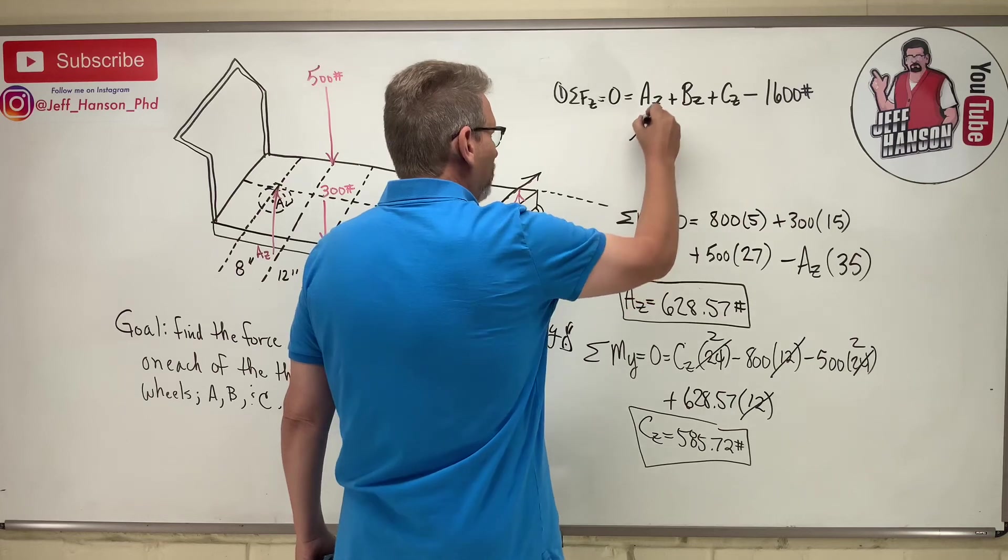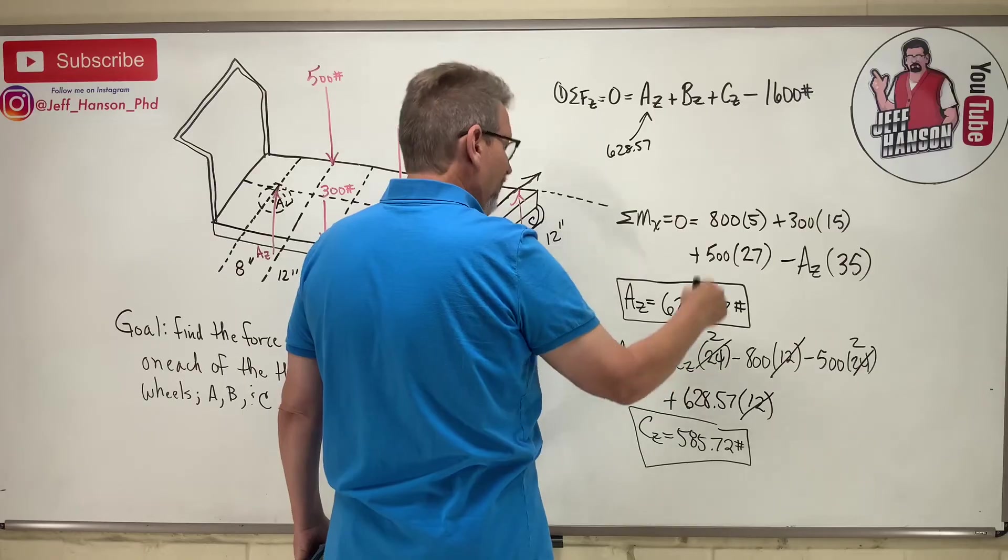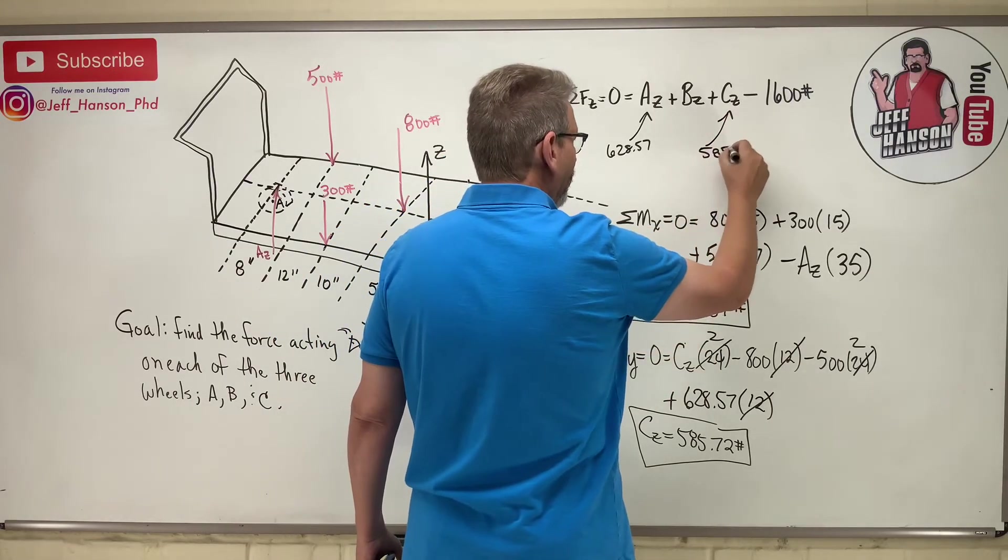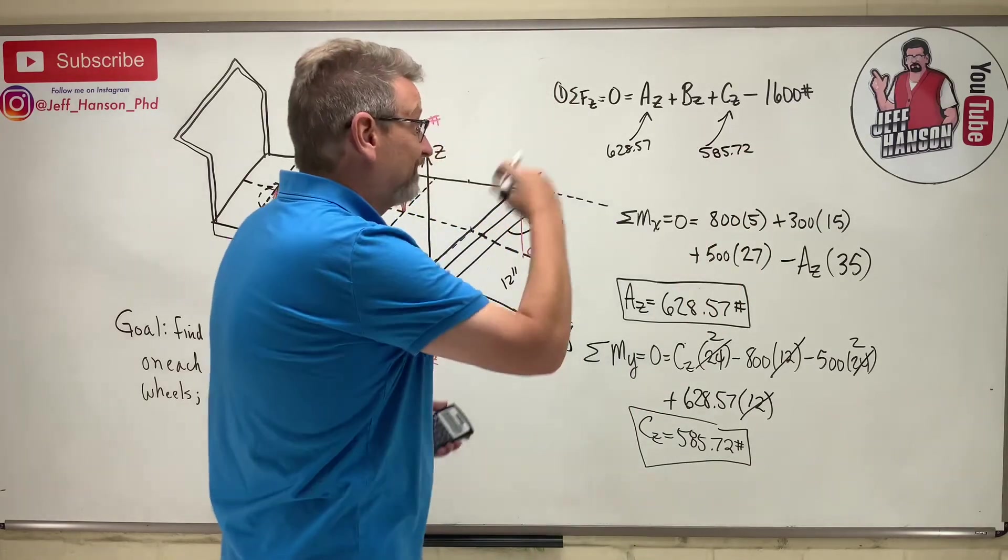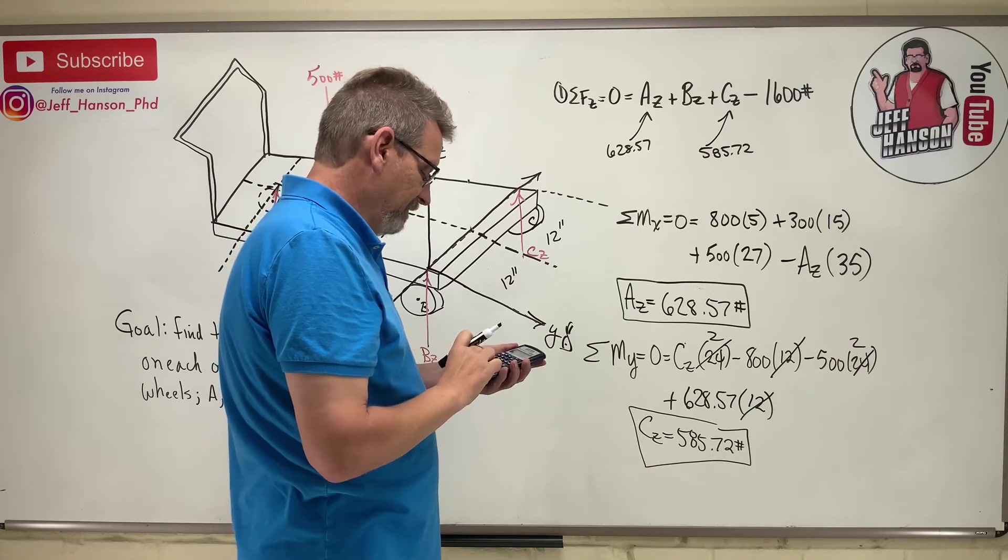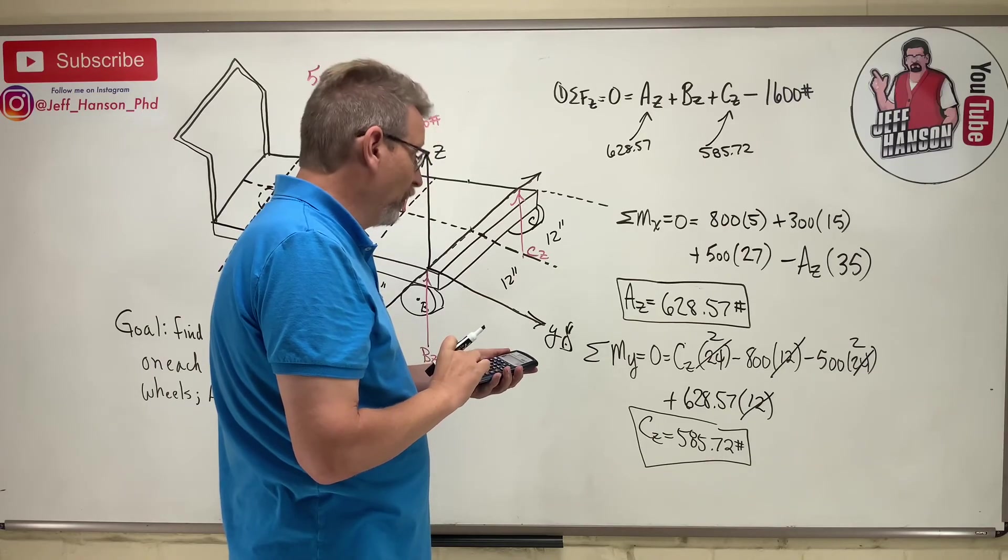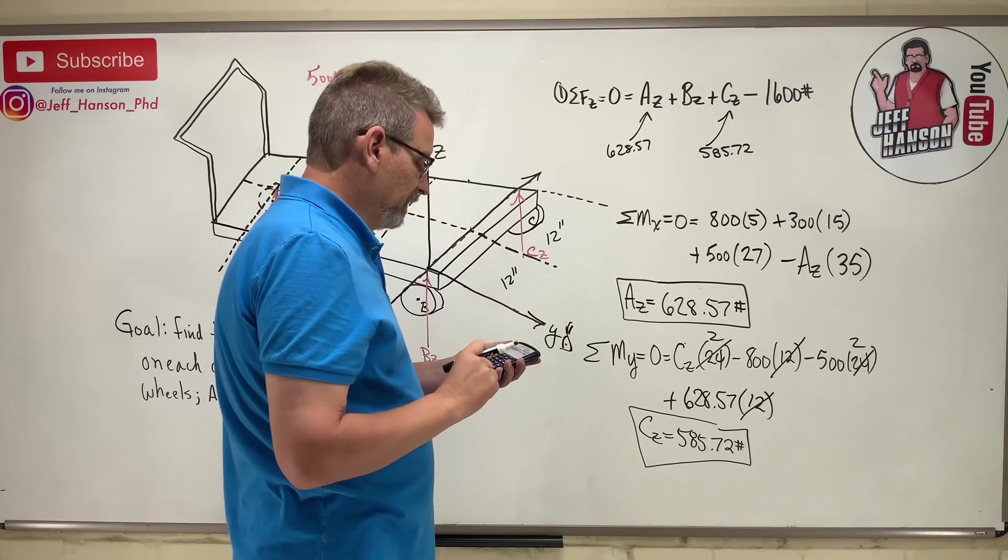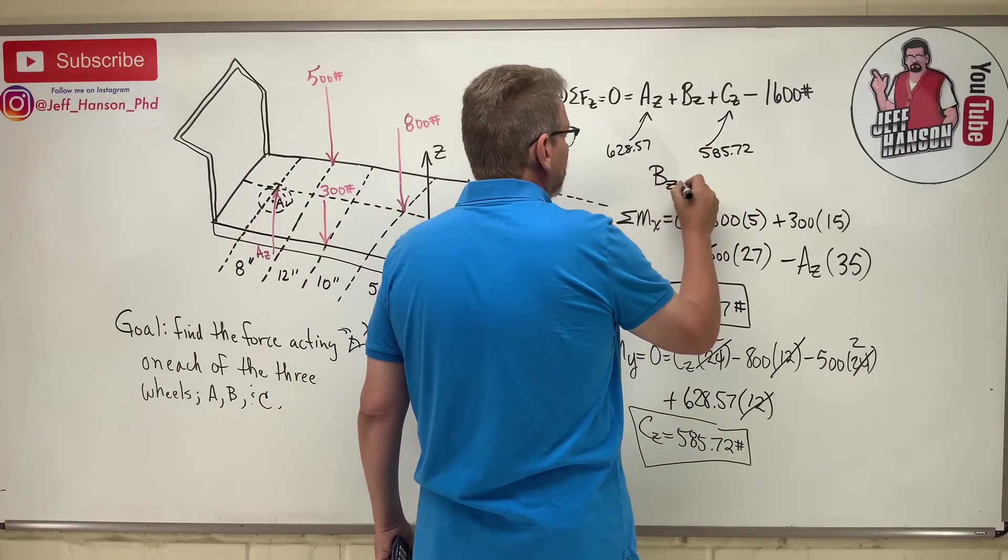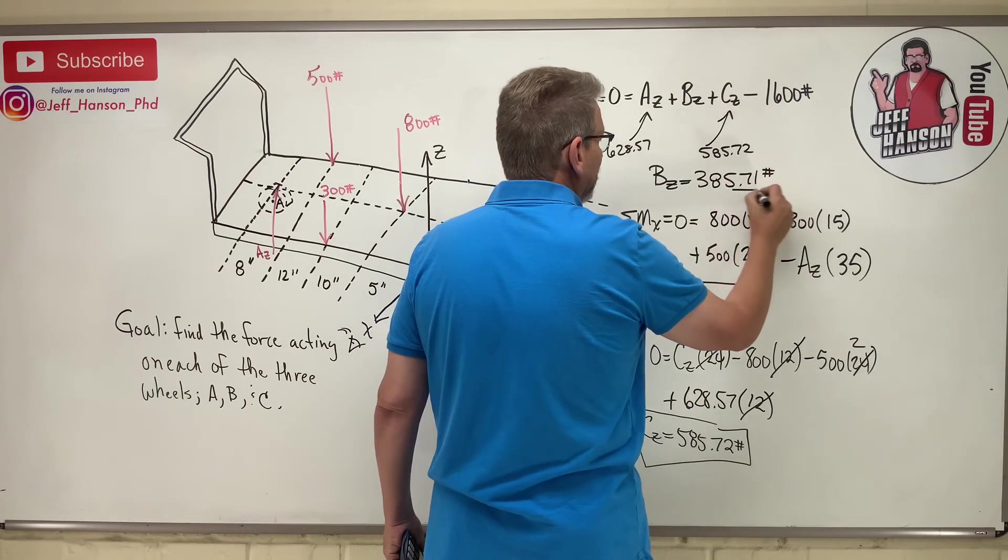628.57, and who else do we find? We found Cz, 585.72. And so, move that 1600 to the other side. So 1600 minus 585.72 minus 628.57 leaves you 385.71. So Bz is equal to 385.71 pounds, and that's it.